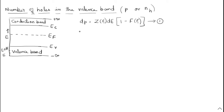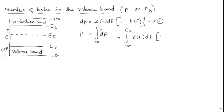Next, to find the total number of holes in the valency band, we integrate dp. So p equals the integral from minus infinity to EV of Z(E) · [1 − F(E)] · dE. This is equation number 2. Now we need to find the value for Z(E) · dE.